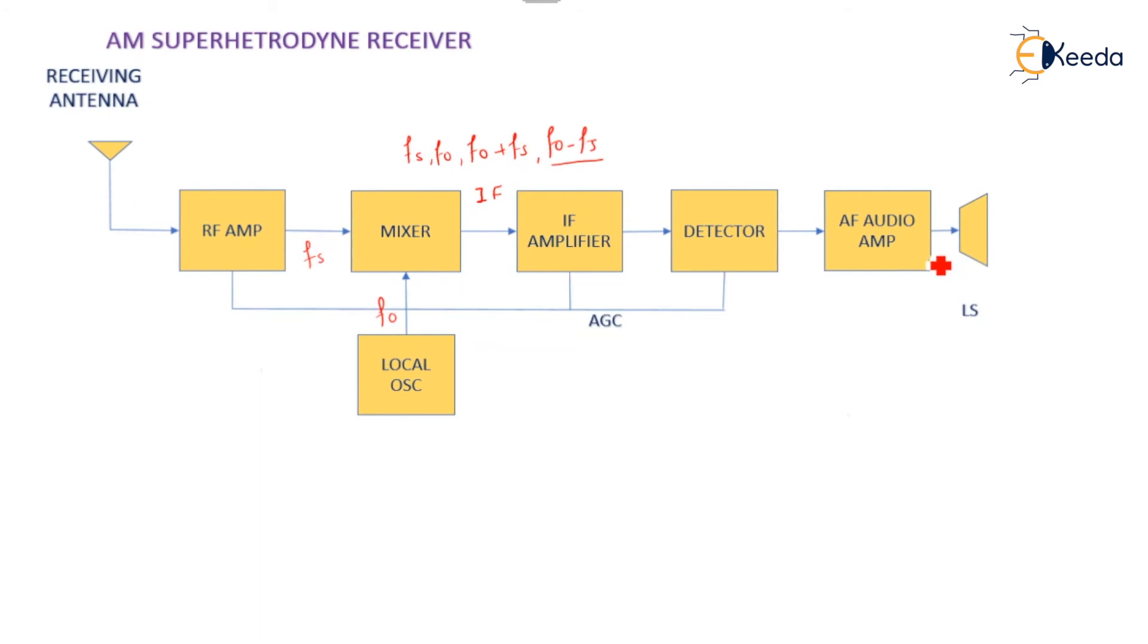Here, automatic gain control is provided throughout the RF amplifier, IF amplifier, and the detector stages. Also, the RF amplifier, mixer, and local oscillator are gang tuned so that they can operate at the same frequency level.